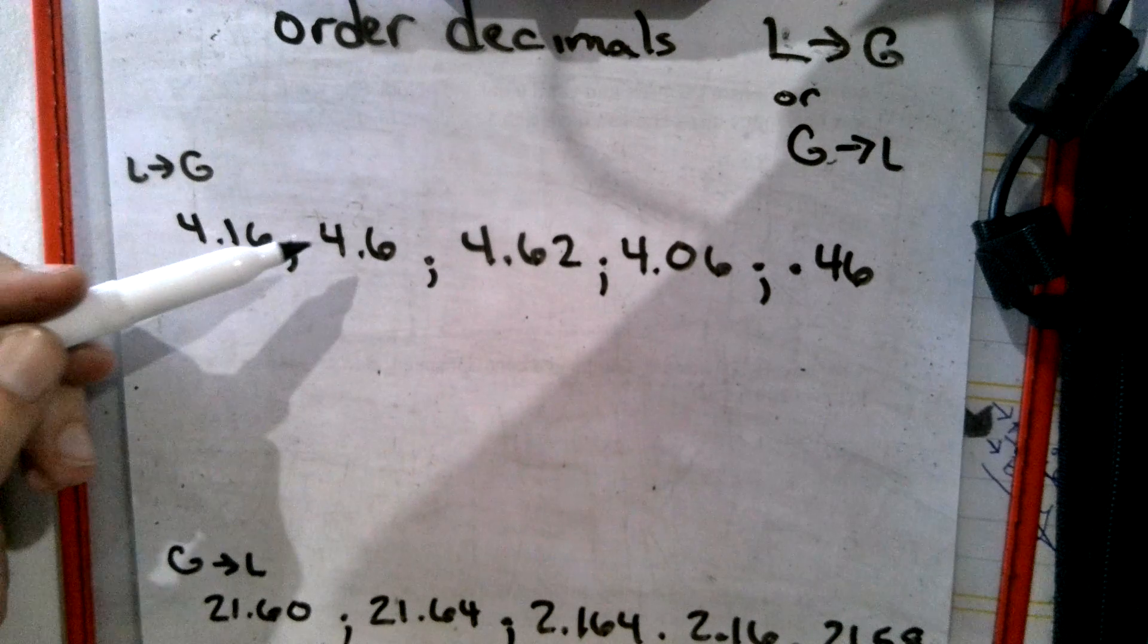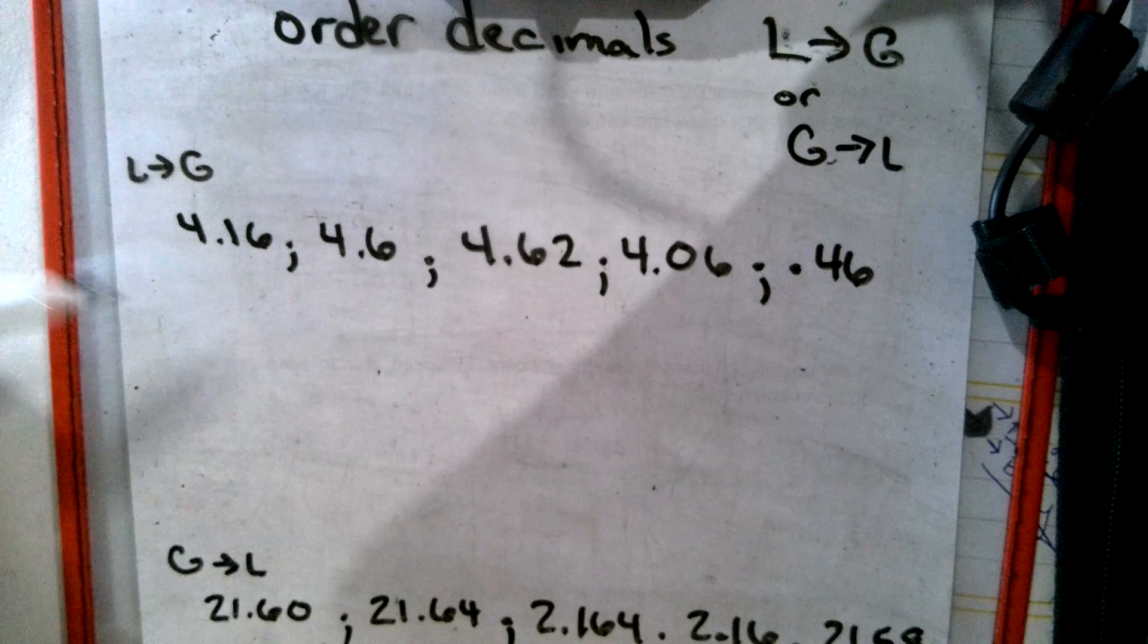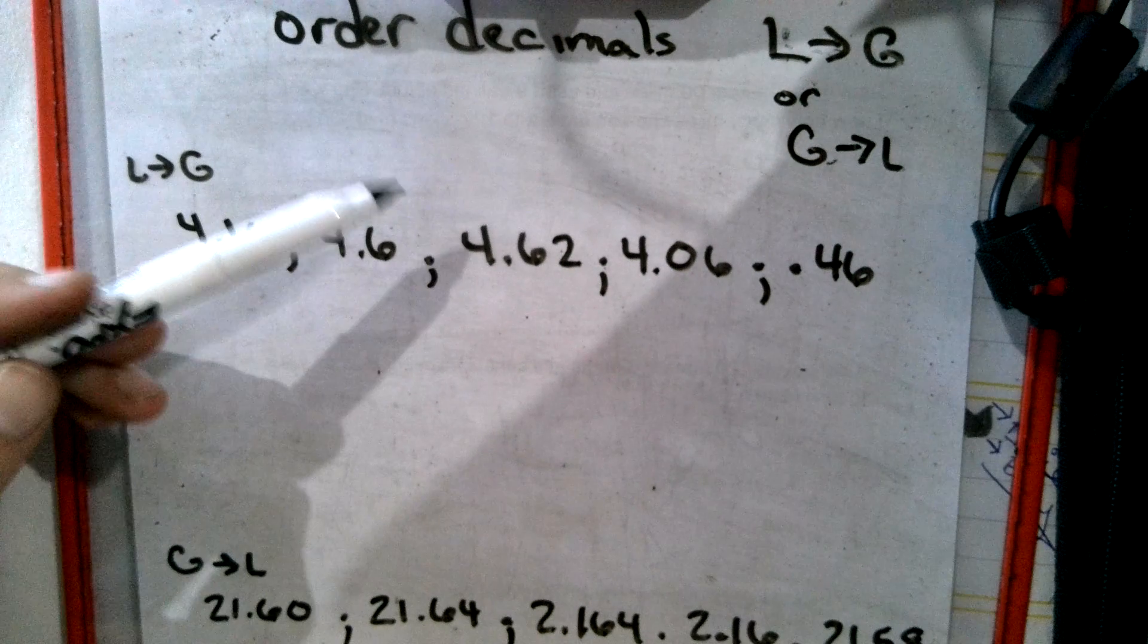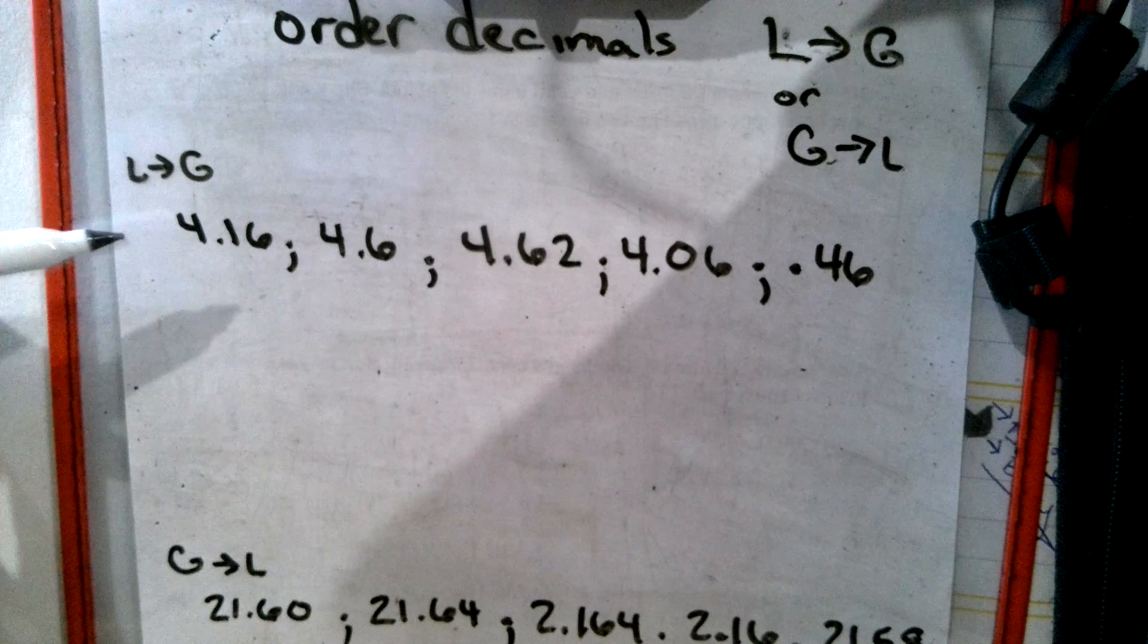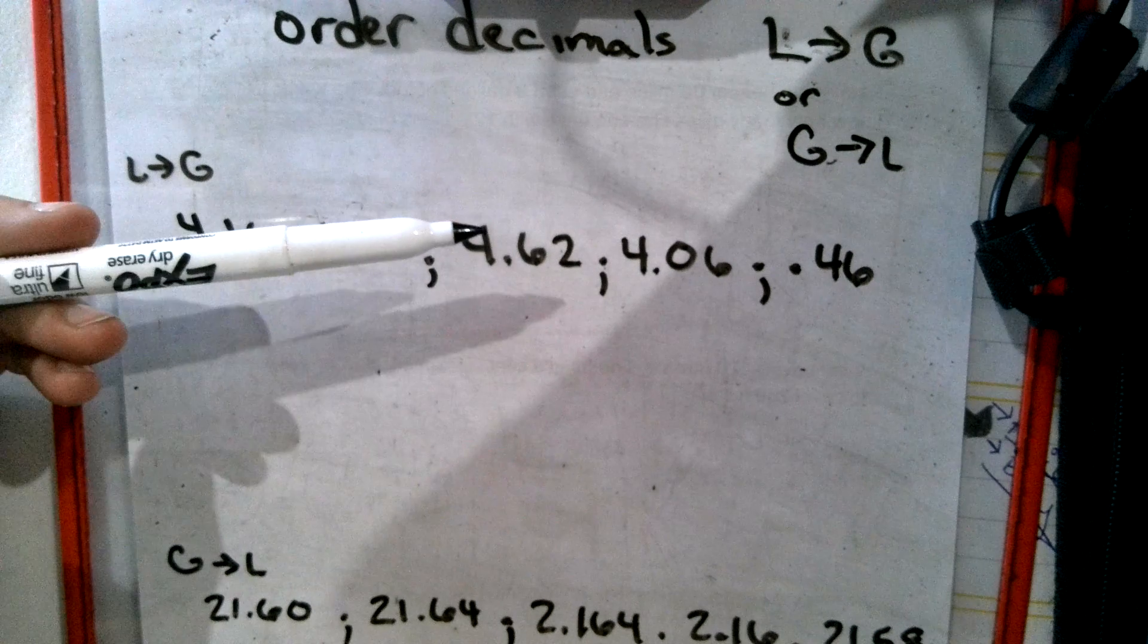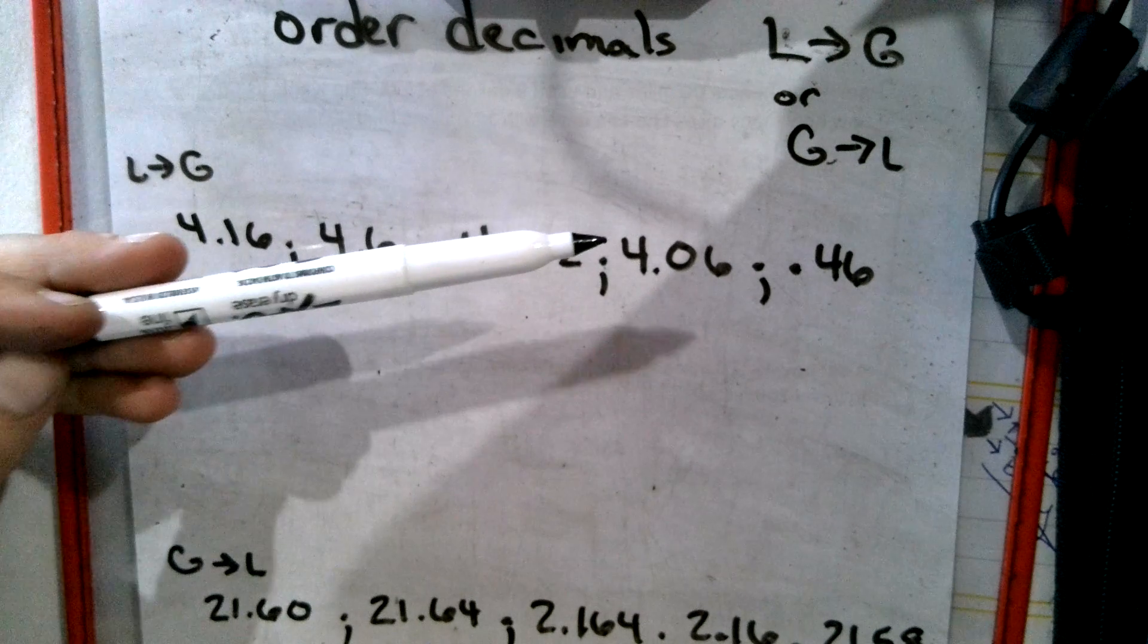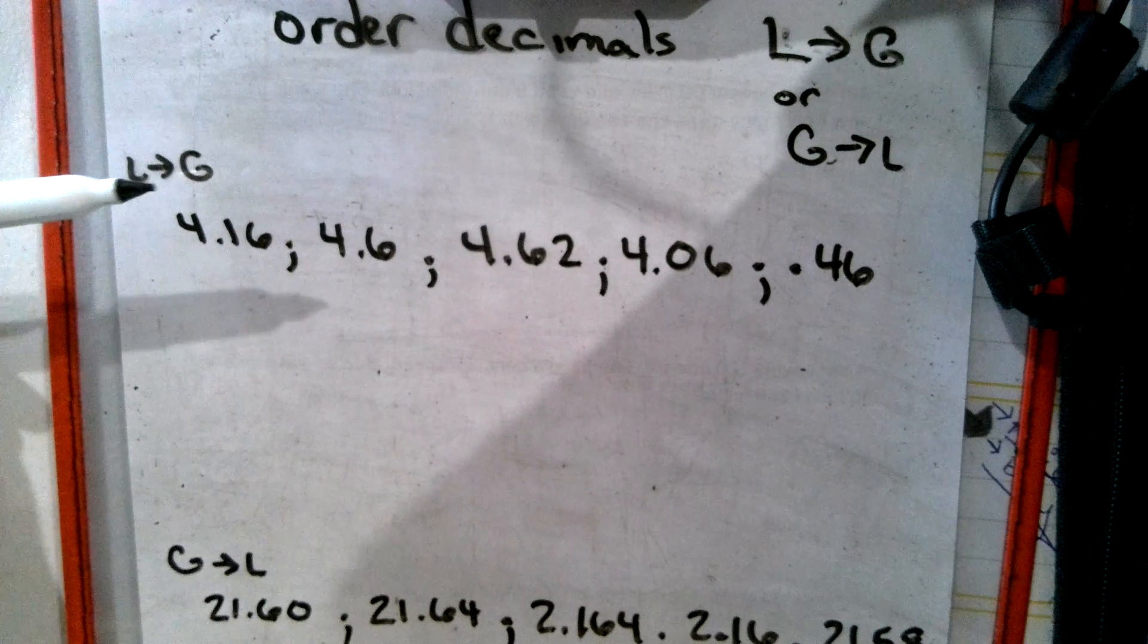This would need a second digit right here in order for it to look like $4.16. So I would add a zero onto this number so they would be all the same length. So then I would look at this as $4.16, $4.60, $4.62, $4.06, and then $0.46. Now, some kids don't like to do it like that.